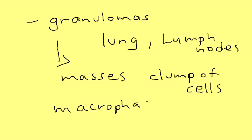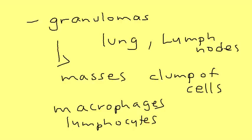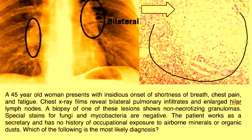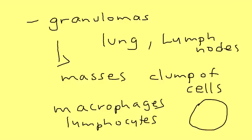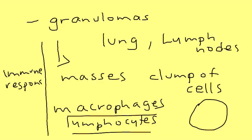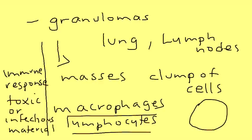These cells — macrophages and lymphocytes — cluster together. Here is a diagram showing those granulomas in a histological picture. What's happening is you have macrophages and lymphocytes clustering because of an immune response to some toxic or infectious material. For example, if the body is introduced to a virus, bacteria, or some inhaled agent that's foreign, the body responds by creating these granulomas — clusters of immune cells — in an attempt to fight off those agents.